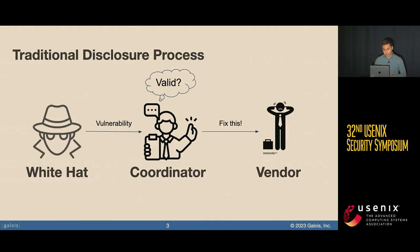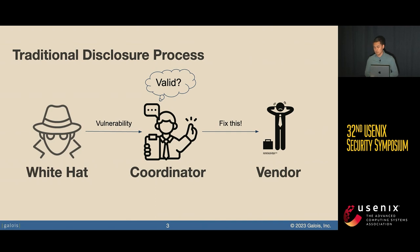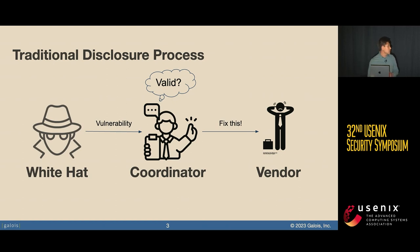Traditionally, this is handled by involving a third-party coordinator who will take your vulnerability, validate it, and then work with key partners in the company like CTOs to ensure the source code and the vulnerability is fixed. This process works, except you need to actually give the vulnerability to this third-party coordinator.